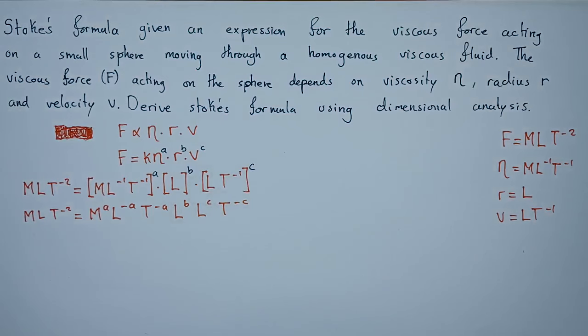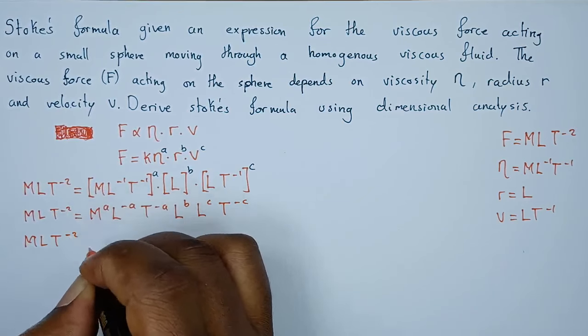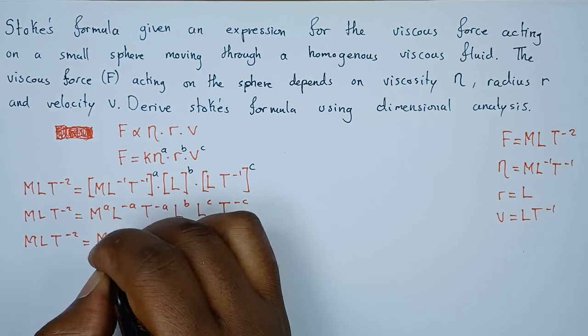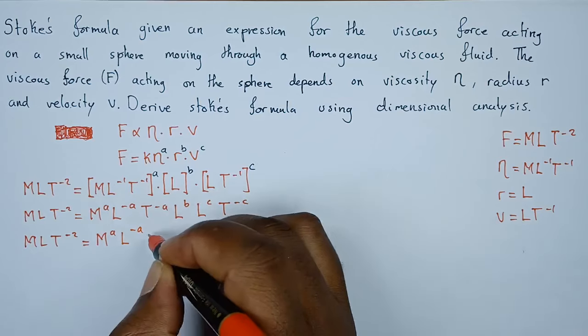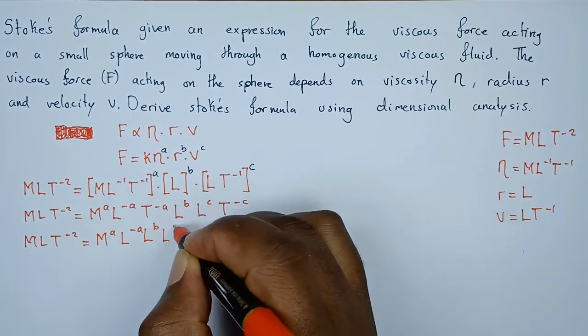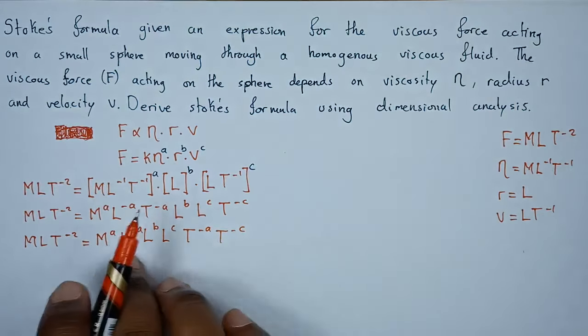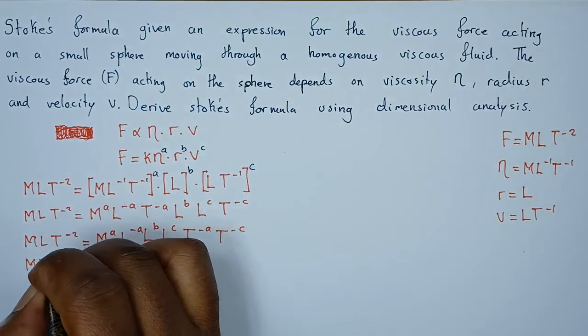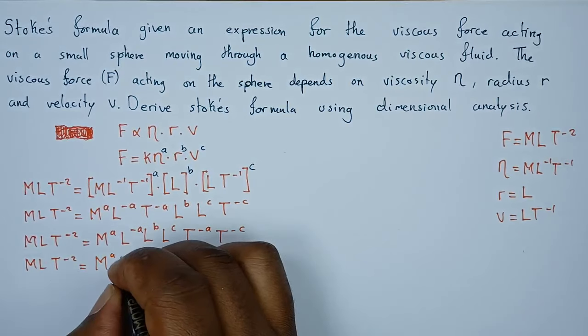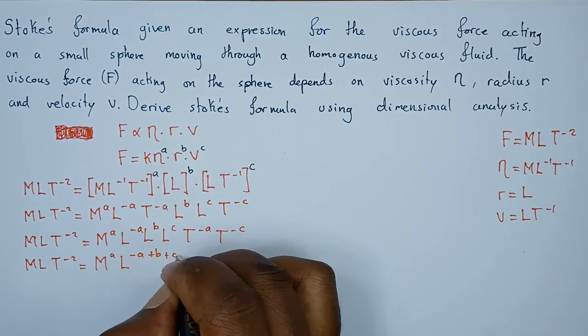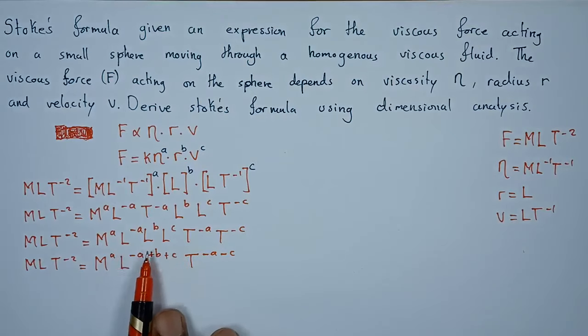Let's put the M's, the L's, and the T's together. M L T⁻² equals M to the power A, L to the powers negative A plus B plus C, and T to the powers negative A minus C. Since the bases are the same, we're going to add the powers. The bases are the same, so we're adding the powers.